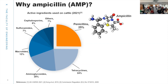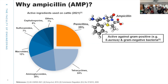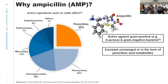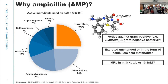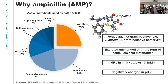Ampicillin is a classic beta-lactam drug — it contains a beta-lactam ring, and is active against gram-positive and gram-negative bacteria. We have a collaborator in the dairy industry who says ampicillin and amoxicillin are the most used antibiotics currently in Scotland, where I'm located. Ampicillin is excreted unchanged or in the form of penicillic acid metabolites. The maximum residue limit threshold set for milk is 4 micrograms per liter, or around 11 nanomolar, and ampicillin is negatively charged at pH 7.6.